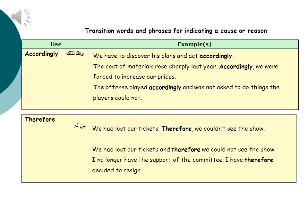The next transition for indicating a cause or reason is 'therefore', which is used as a way of showing how a sentence or clause is related to what has already been said, and it is normally followed by a comma. Examples: We had lost our tickets. Therefore, we couldn't see the show. We had lost our tickets, and therefore we couldn't see the show. I no longer have the support of the committee; I have therefore decided to resign.